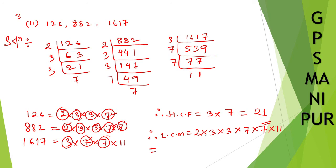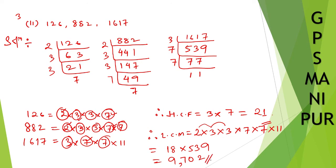Calculating: 3 × 3 = 9, then 9 × 2 = 18. 7 × 7 = 49. 49 × 11 = 539. Then 18 × 539 = 9702. I hope the answer is correct. Thank you so much. We will meet in the next video.